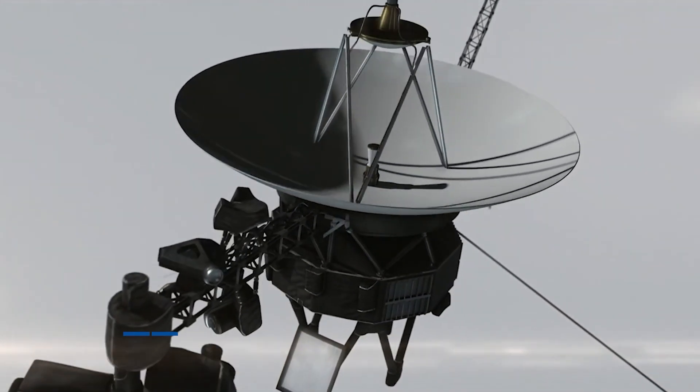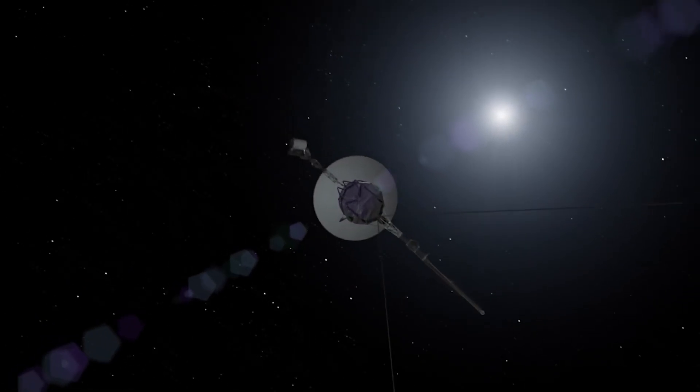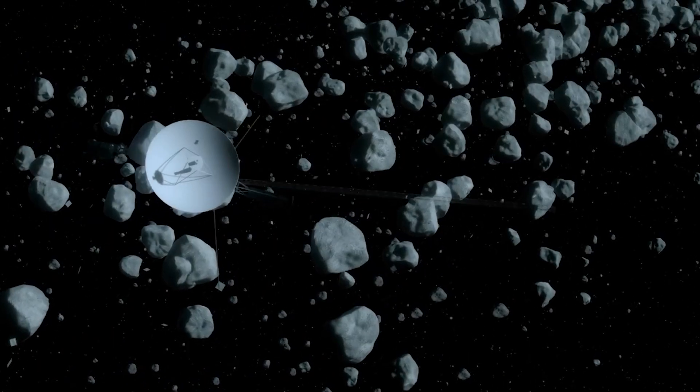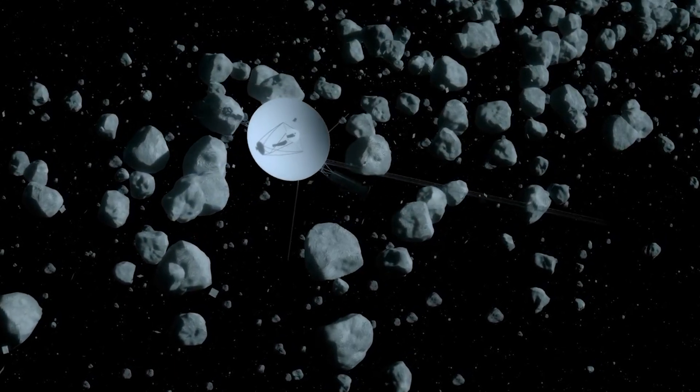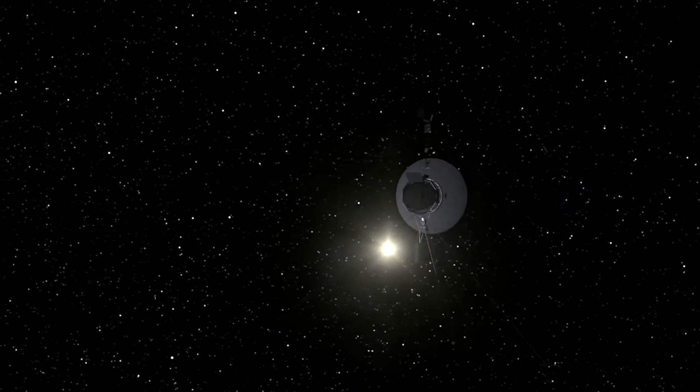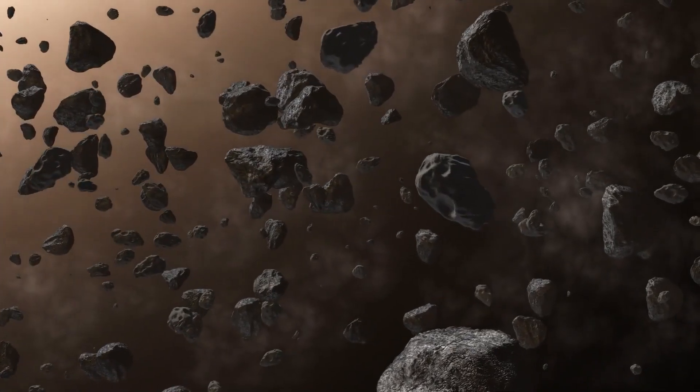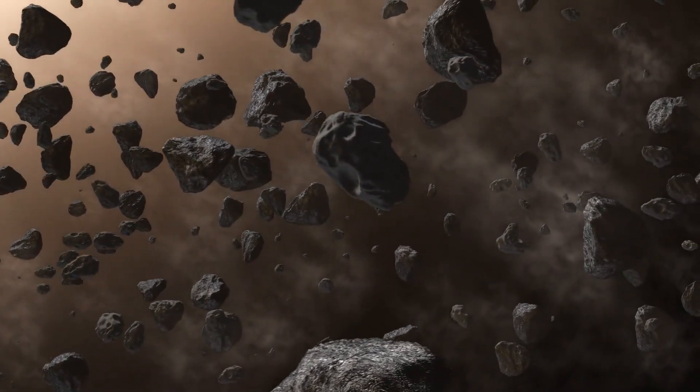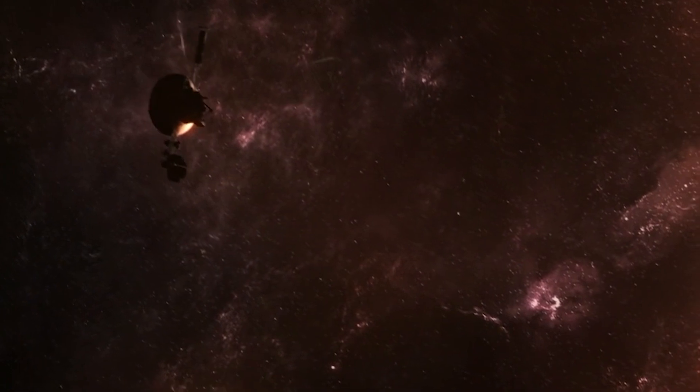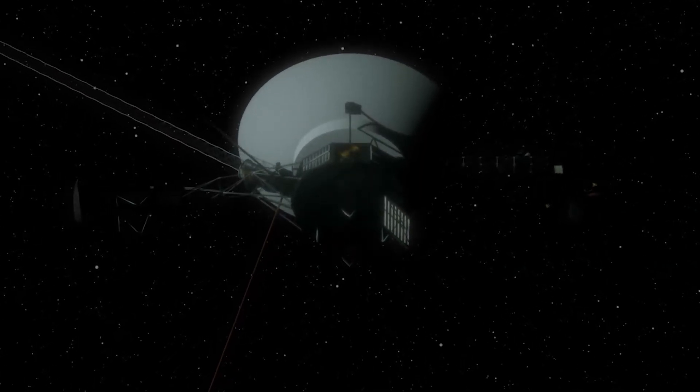Initially designed to last five years, the Voyager probes have defied all estimates and continue to operate. However, their recent discovery has taken their mission to a whole new level. Voyager 1 recently detected unidentified objects passing through space, and this revelation has the potential to revolutionize our understanding of the cosmos. Join us as we delve into the nature of these unknown objects and explore how this discovery may forever change our perspective on the information gathered by the Voyager spacecraft.